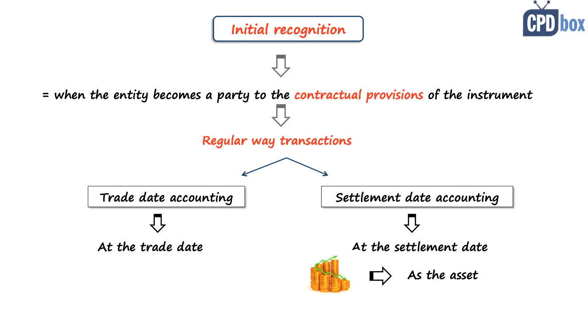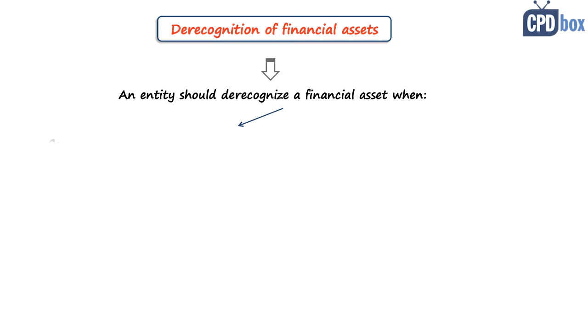The initial recognition rules are quite straightforward. What about de-recognition — or when to remove a financial instrument from the financial statements? The rules about de-recognition are much more complicated than the initial recognition rules, and this is to prevent companies from hiding toxic assets like bad loans in their financial statements. The main rule is that an entity should de-recognize a financial asset only when the contractual rights to the cash flows from the asset expire.